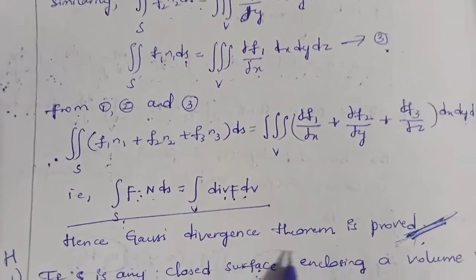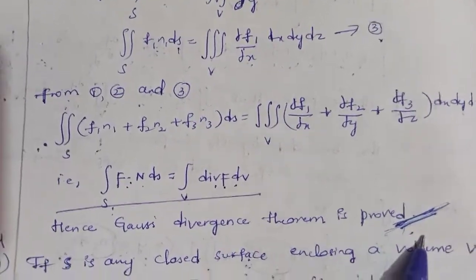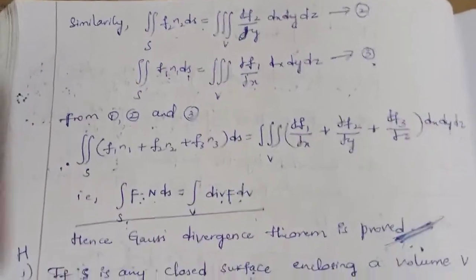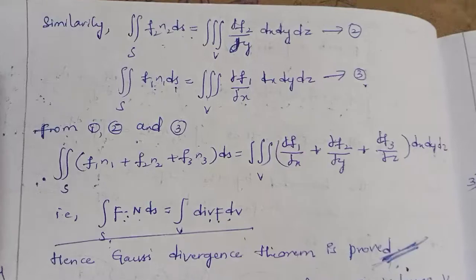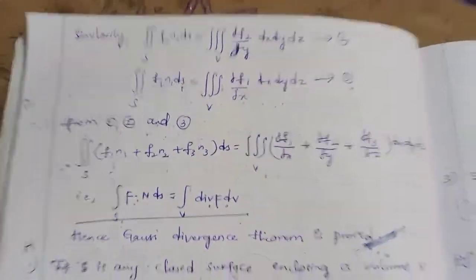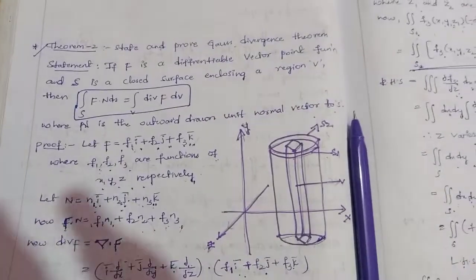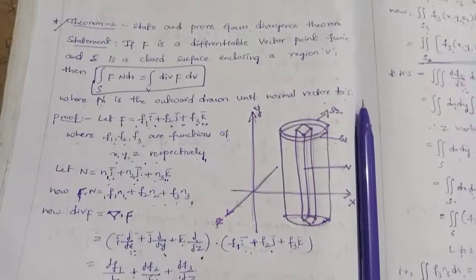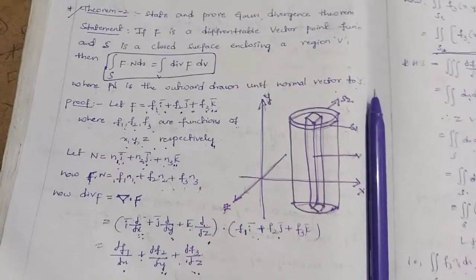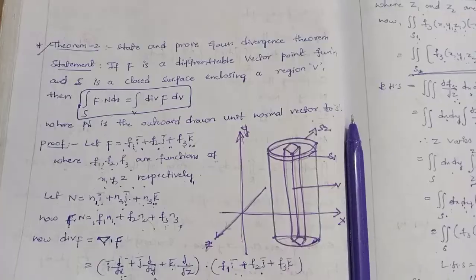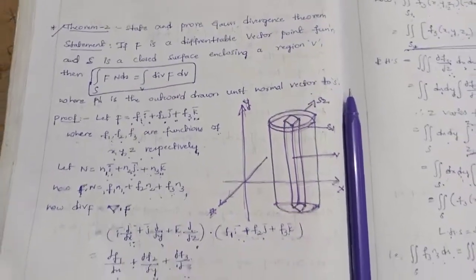Hence Green's Divergence theorem is proved. This is an important theorem — maximum importance for exams. Next class is the Stokes theorem. Thank you for watching. Please like, share, and comment, and please subscribe.